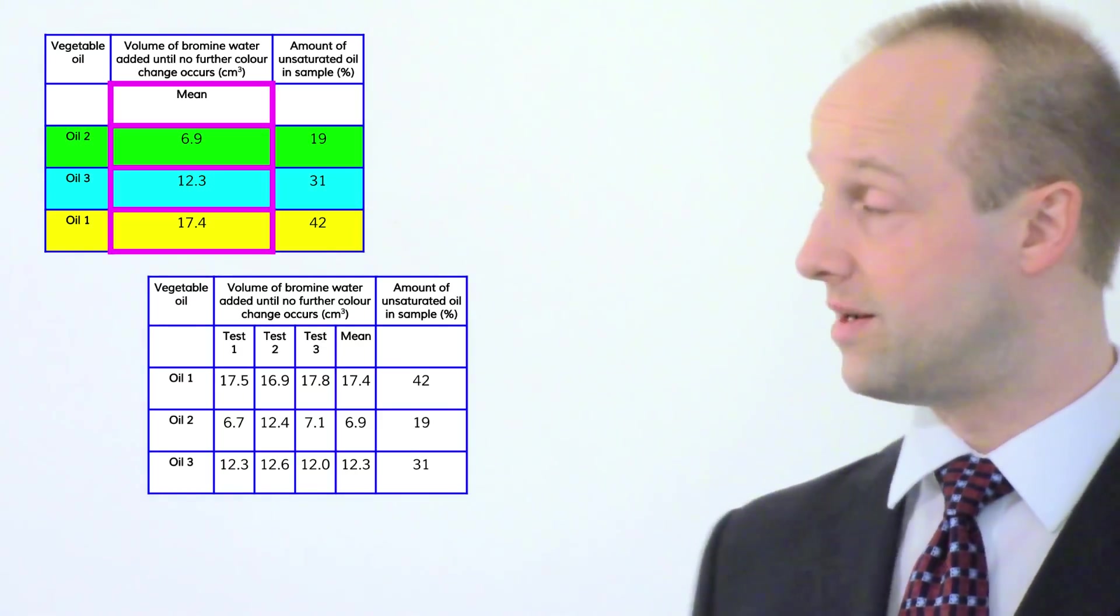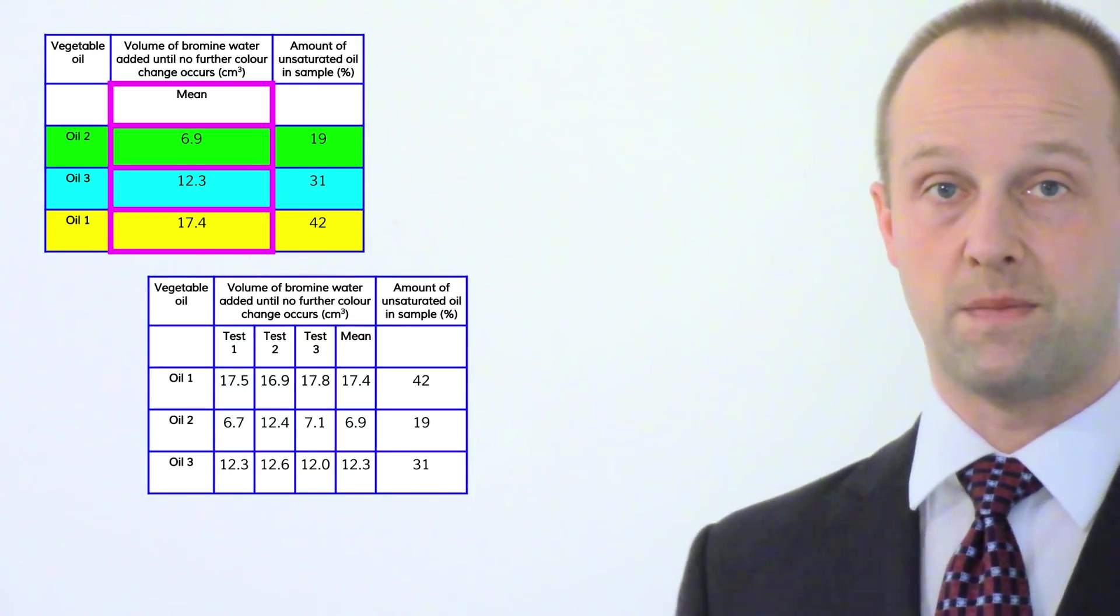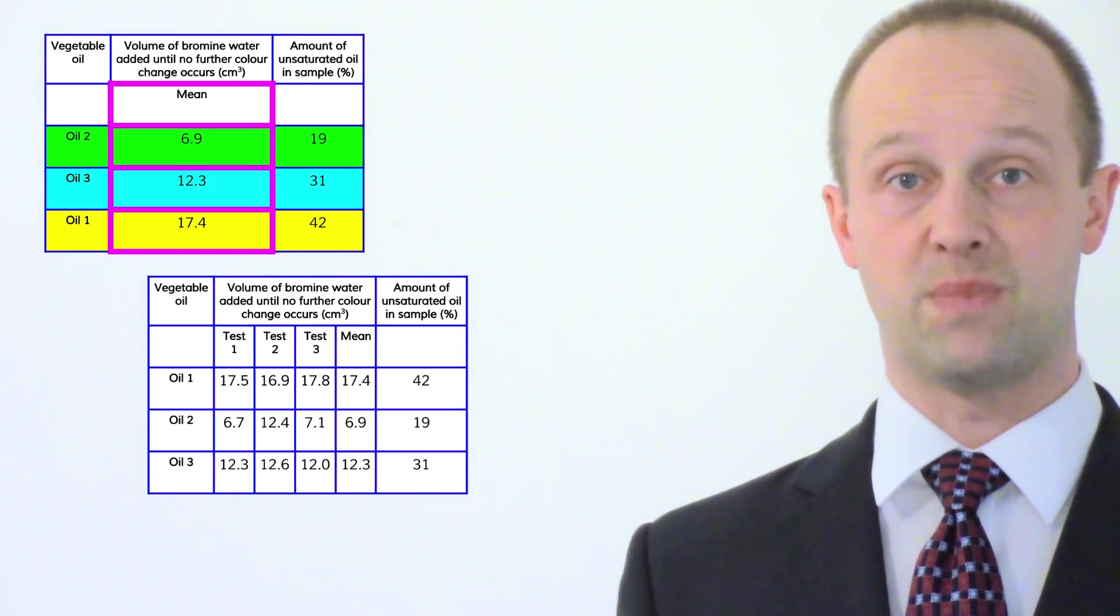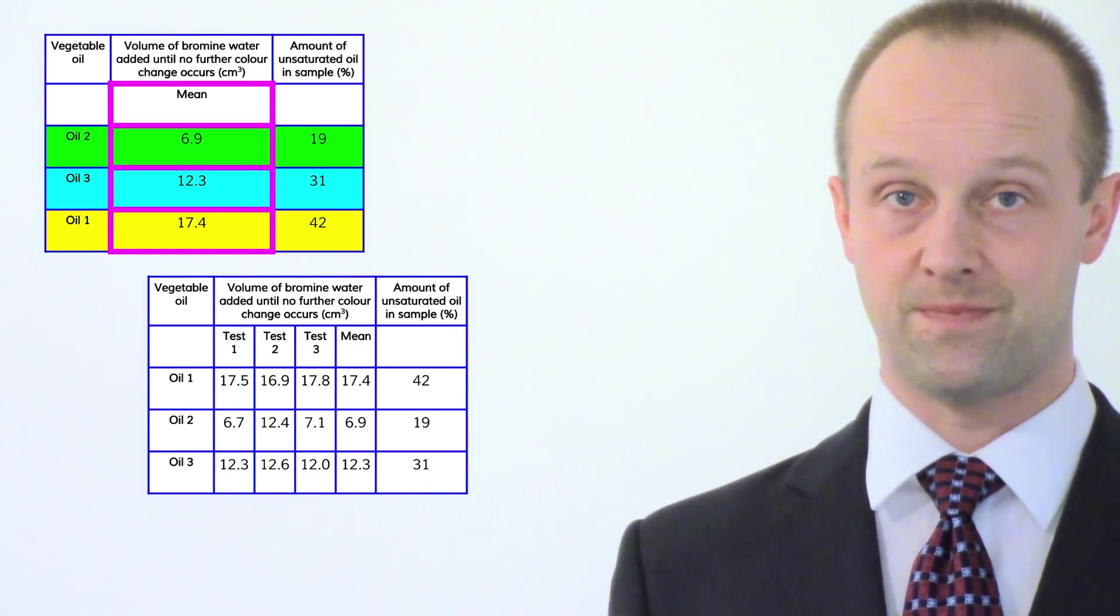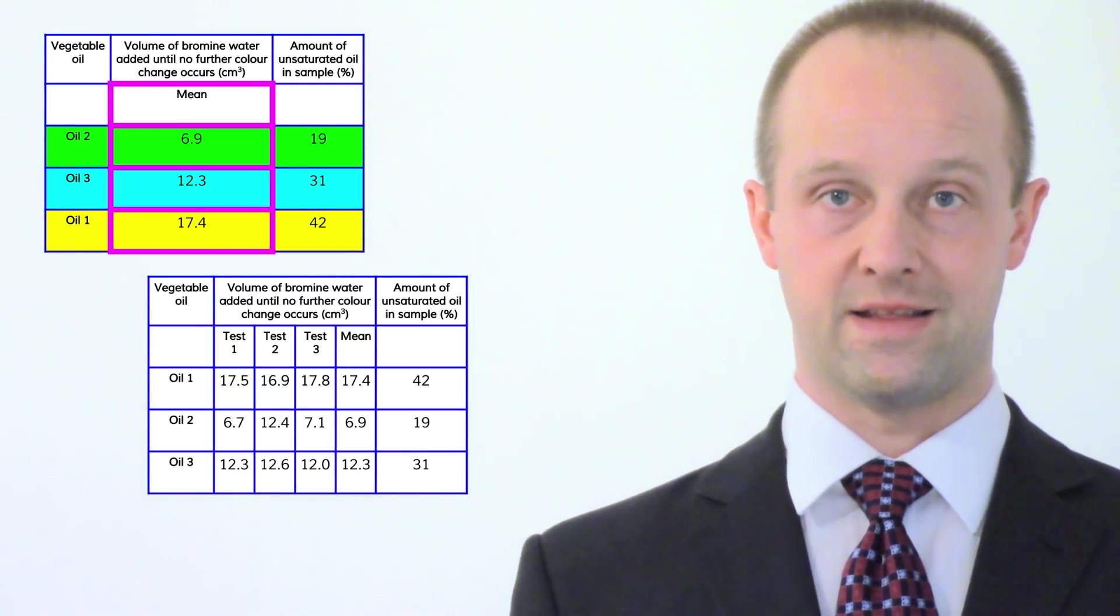All the information which you needed was really in that means column. You could totally ignore the rest for most of this question except for the bit where you were talking about anomalies.